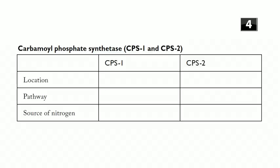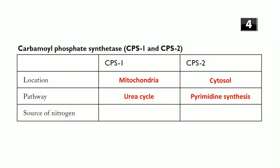There's also a carbamoyl phosphate synthetase 1 — don't confuse them. Three key differences: First, location — CPS1 is in the mitochondria, CPS2 is in the cytosol. Second, pathway — CPS1 is in the urea cycle, CPS2 is in pyrimidine synthesis. Third, nitrogen source — CPS1 uses ammonia, CPS2 uses glutamine.